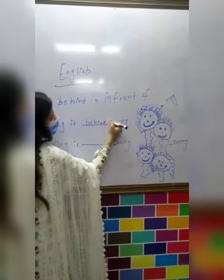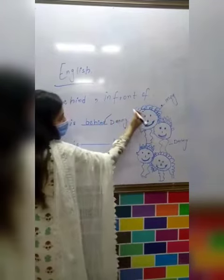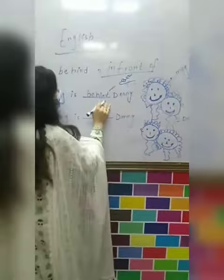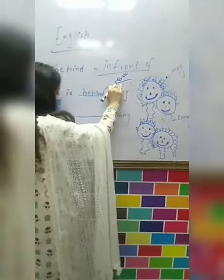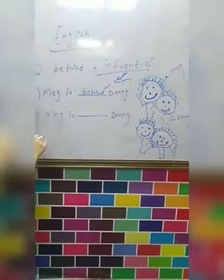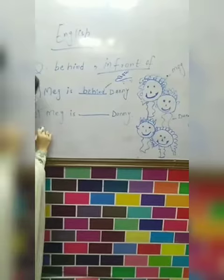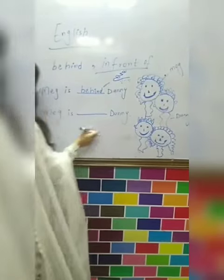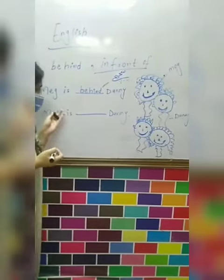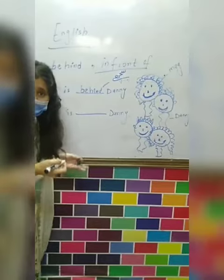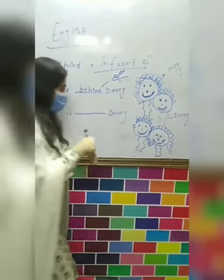What is the meaning of behind? 'Piche.' Now in the second blank we have the question: Meg is dash Danny. Wait — we have the same blank, the same question? So let's see the pictures.